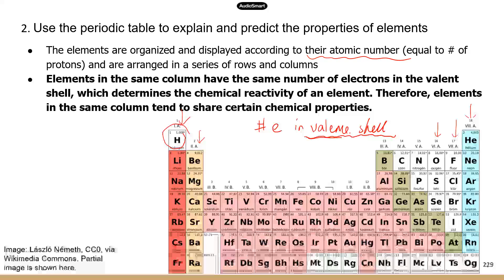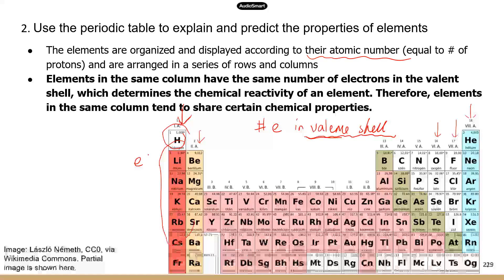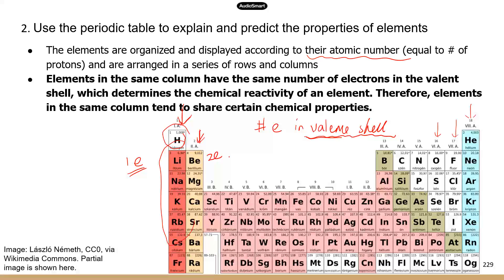If you look at some of the columns — some of you are probably already familiar with this — if you look at the elements in the same column, for example the first column, all these elements are going to have one electron in the valence shell. Then the next column, they're going to have two electrons in the valence shell.